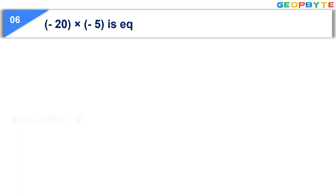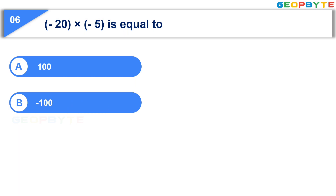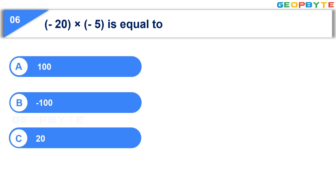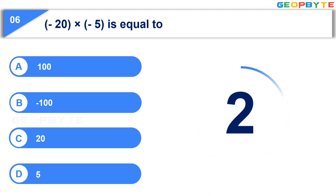The sixth question: Minus 20 multiplied by minus 5 is equal to — Option A: 100. Option B: minus 100. Option C: 20. Option D: 5. Your time starts now. Your time is up. And the correct answer is Option A: 100.